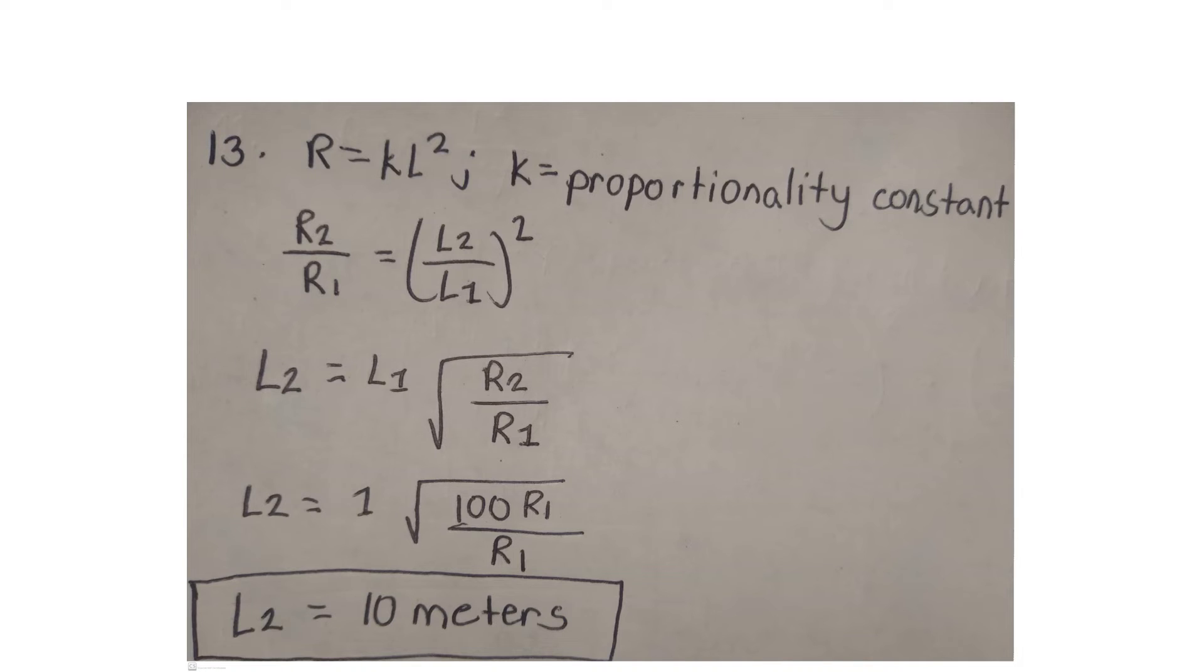R1 would be cancelled and square root of 100 is equal to 10 times 1 is equal to 10, and the final length is 10 meters.